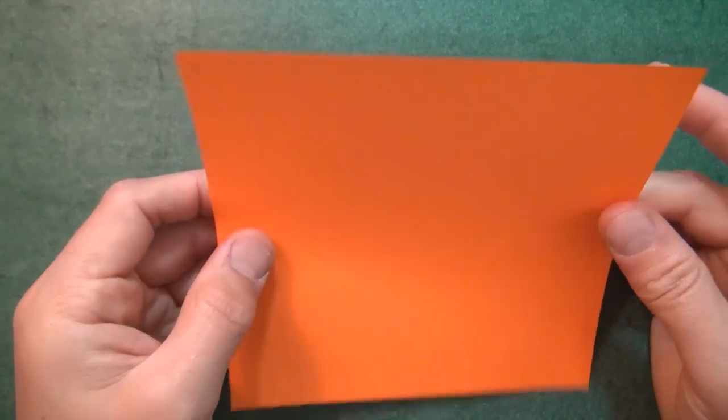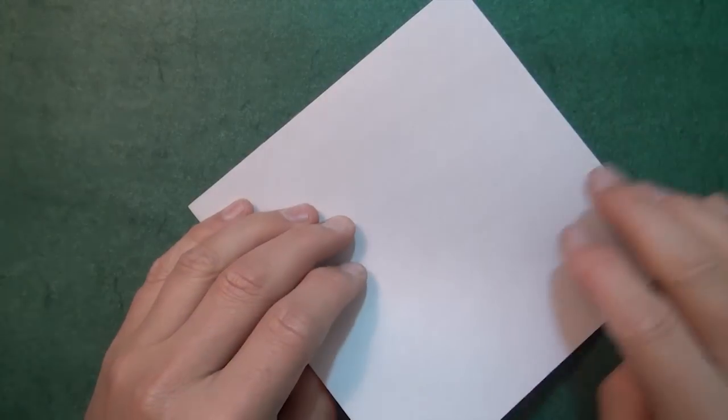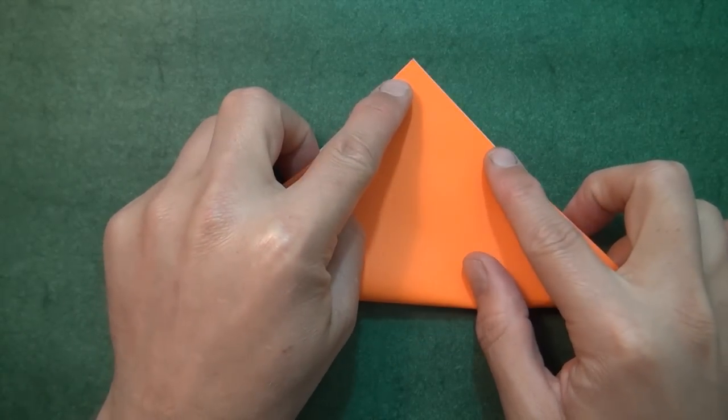Alright, so for this model it's best to use a 6 inch square. White side up, let's valley fold diagonally in half.